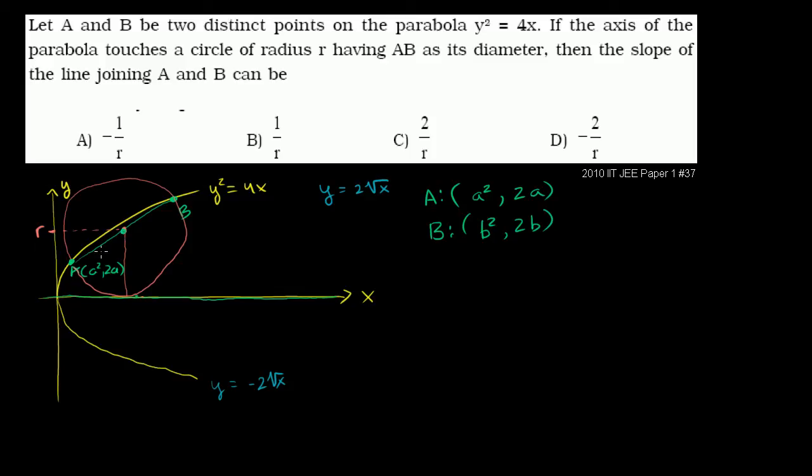Now let's get the coordinates for the center of that diameter. The center is just the midpoint of this point and that point. The midpoint of A and B is going to be equal to the average of the x values, a squared plus b squared over 2, and the average of the y values, 2a plus 2b over 2. The 2's cancel out, so this is a plus b. This point is a squared plus b squared over 2, comma, a plus b.